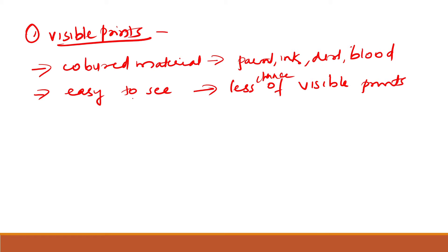Visible prints are less common at crime scenes because the culprit can see that their fingerprint has adhered to a surface and will remove it before leaving. If visible prints are still found, it is the result of haste or inattention. These prints do not need any development and can be recorded by taking photographs with or without filters.